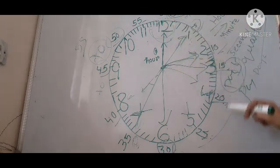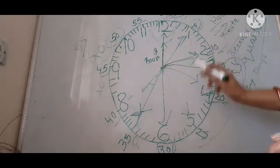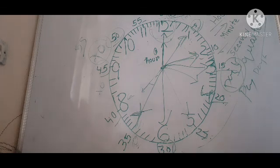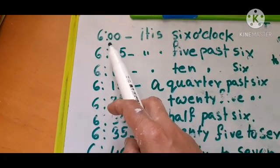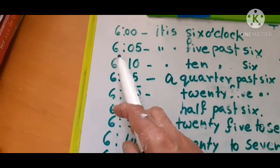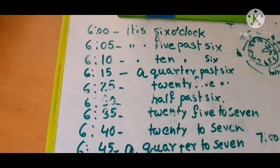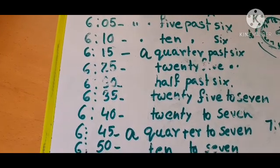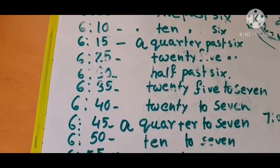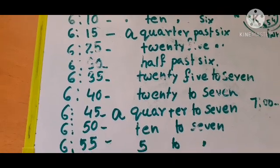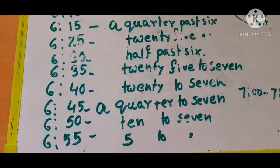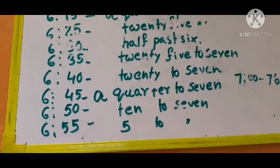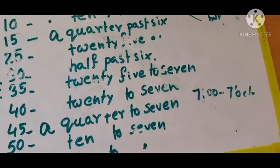Let me tell you again with writing so it is easy to understand. I have drawn 6 o'clock on the board. 6:00 means 6 o'clock. 6:05 means 5 past 6. 6:10 means 10 past 6. 6:15 means a quarter past 6. 6:20 means 20 past 6. 6:25 means 25 past 6. 6:30 means half past 6. 6:35 means 25 to 7. 6:40 means 20 to 7. 6:45 means a quarter to 7. 6:50 means 10 to 7. 6:55 means 5 to 7. Finally it is 7 o'clock.